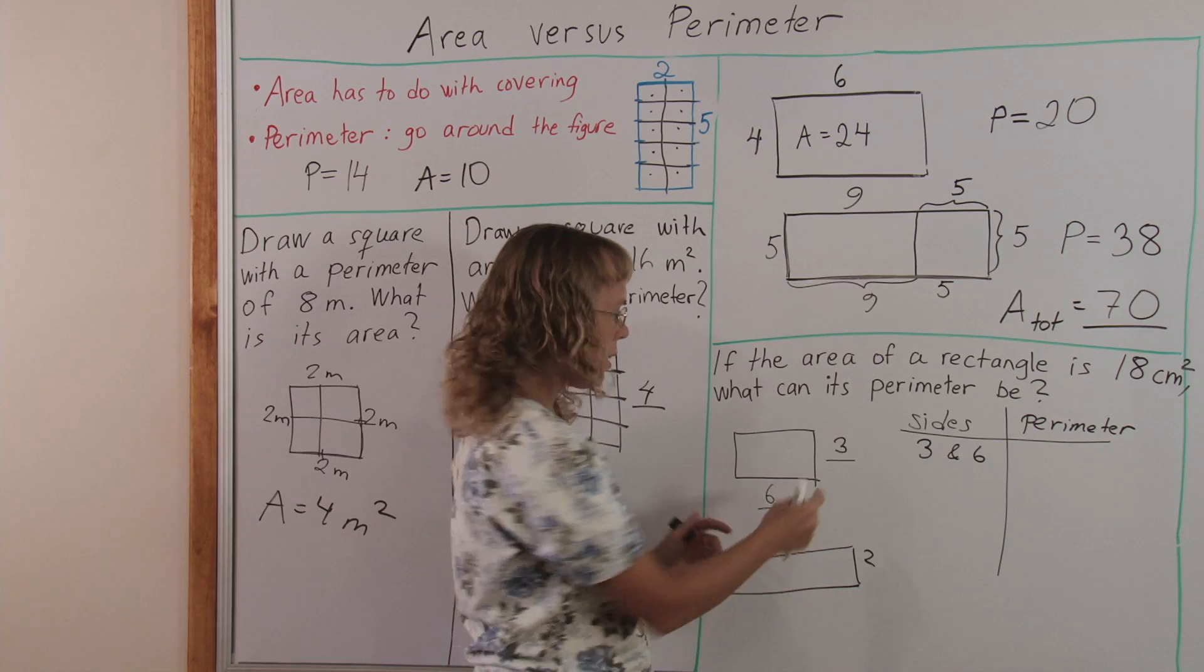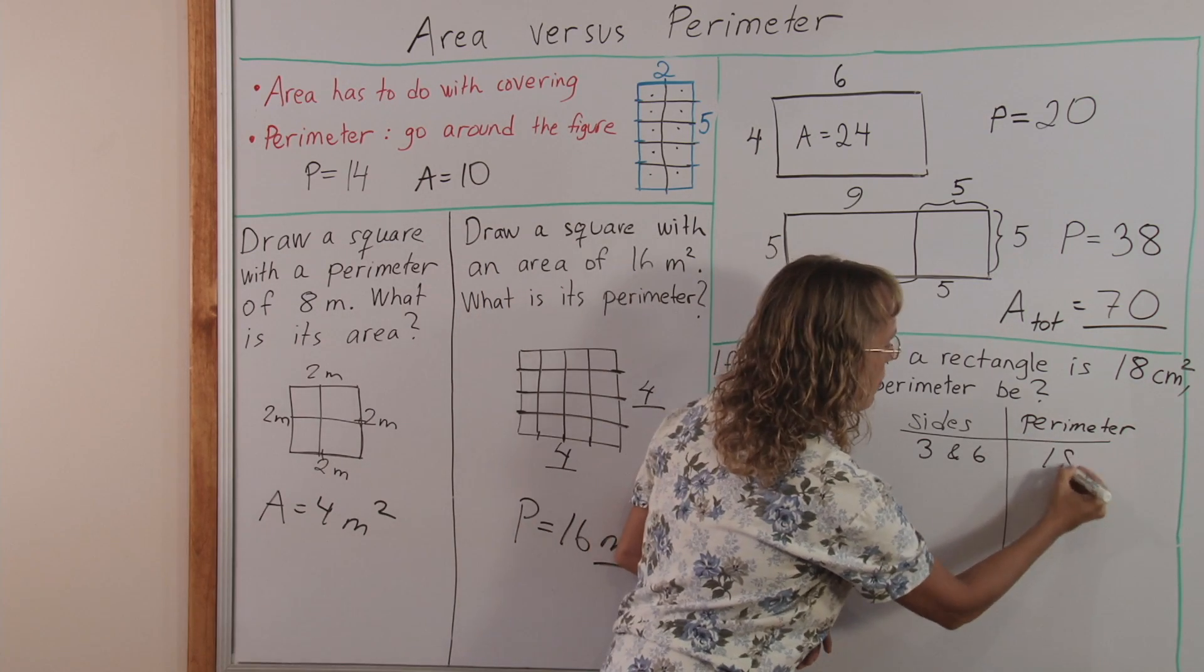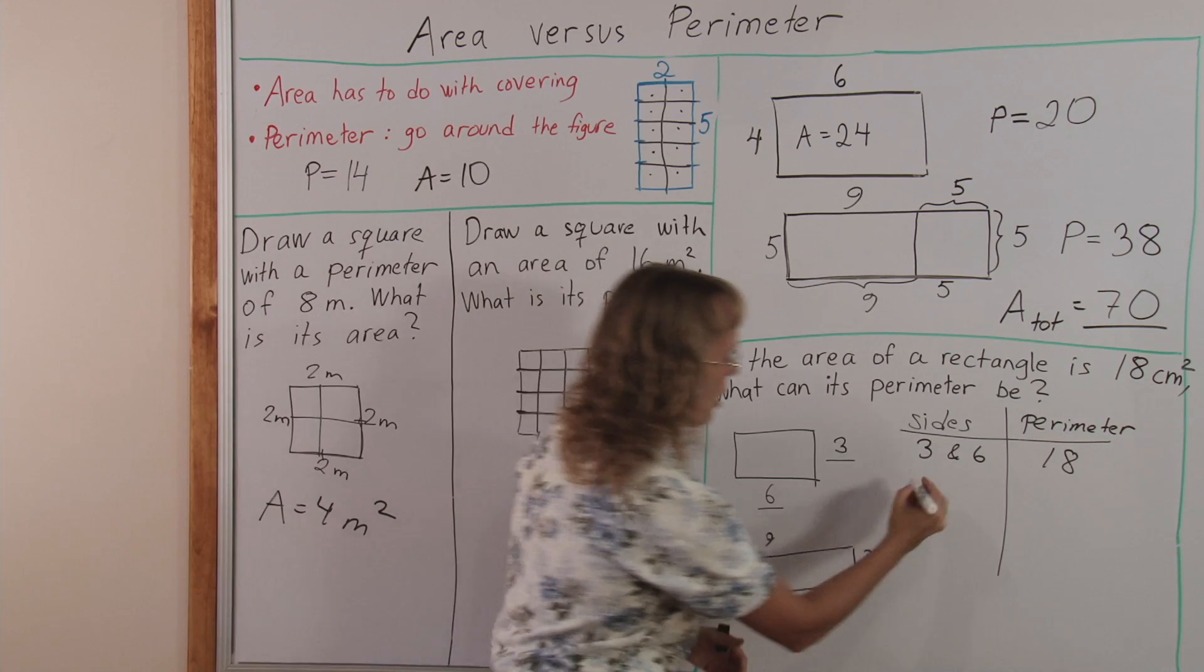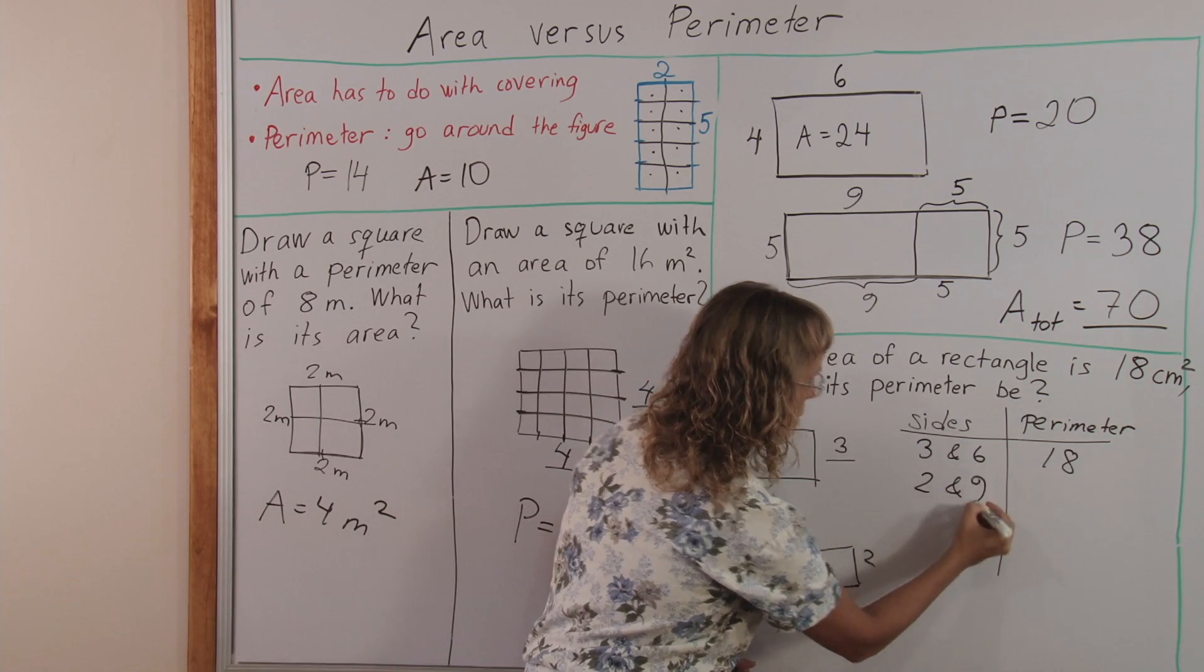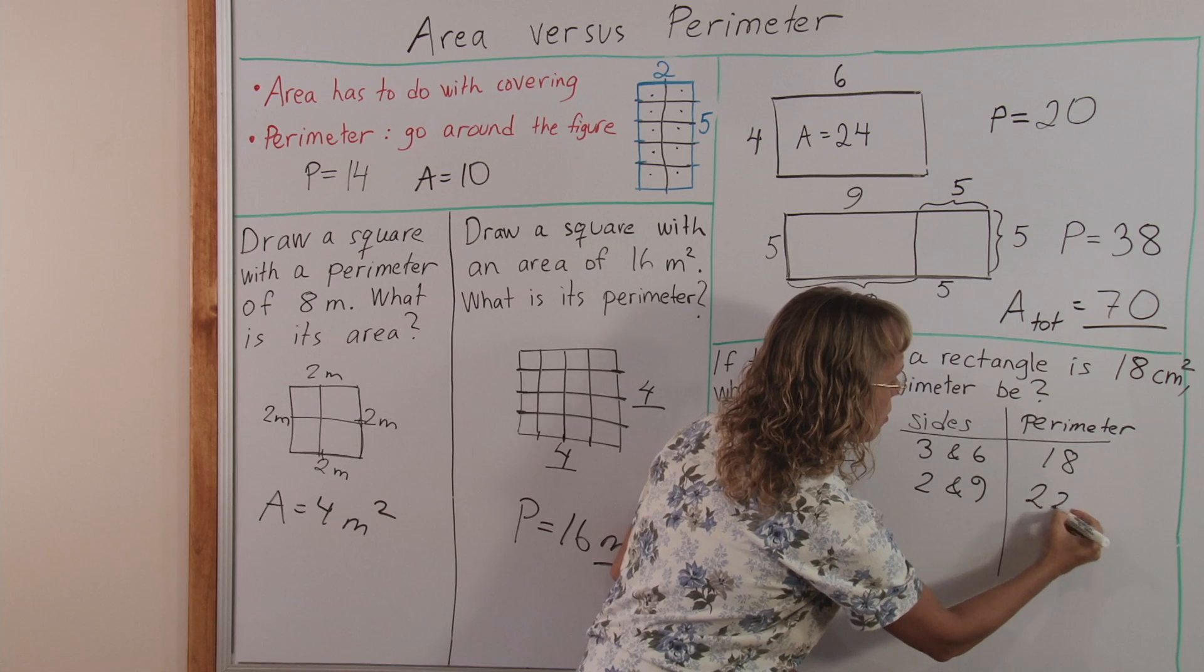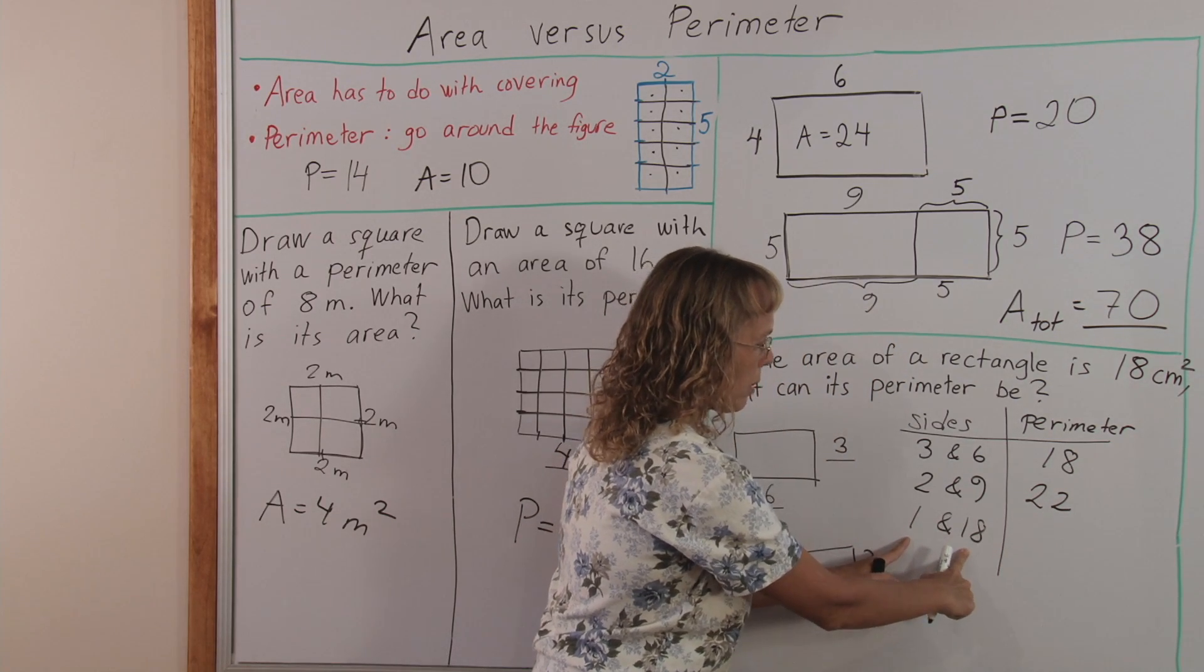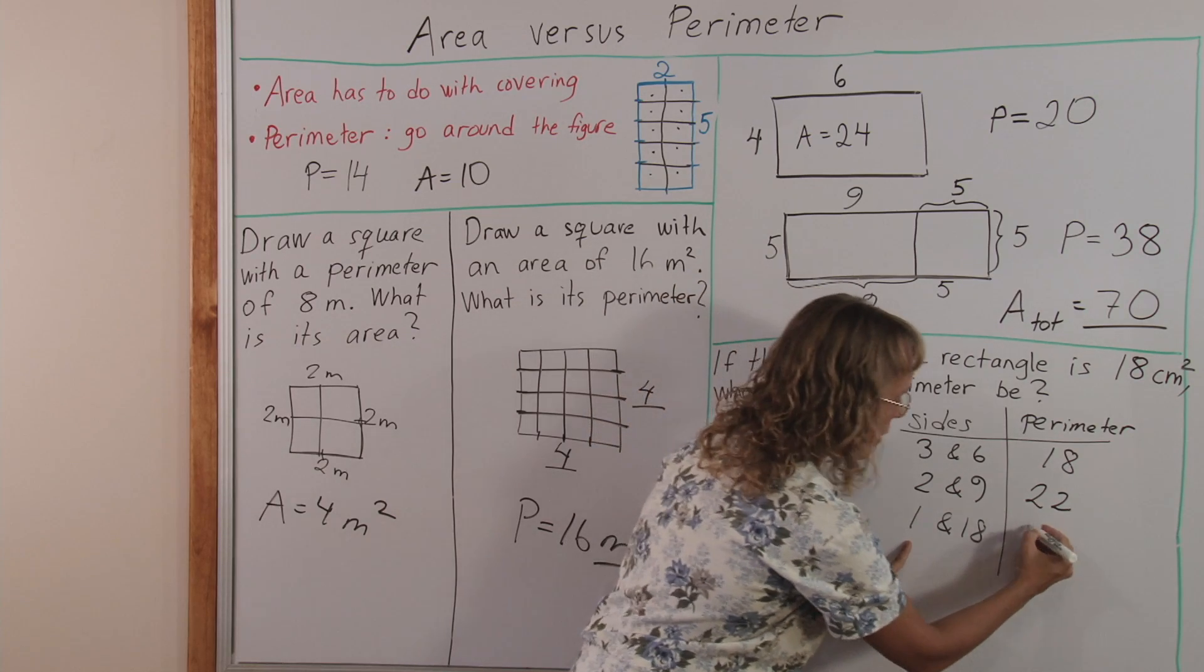And perimeter is then three plus six is nine, double that eighteen. Or the sides might be two and nine, two and nine is eleven, double that twenty-two. Other sides could be one and eighteen, together they make nineteen, double that is thirty-eight.